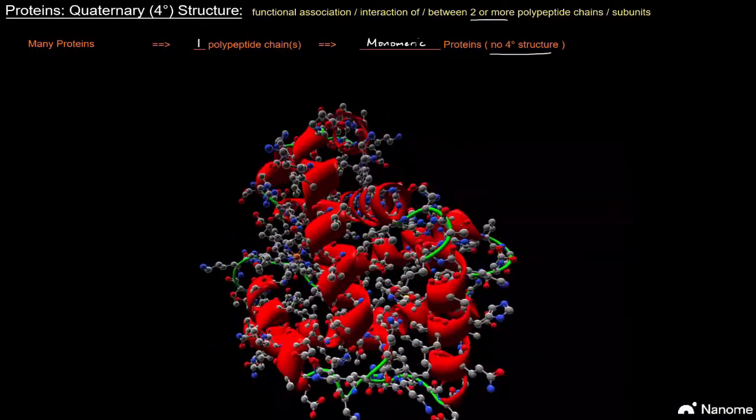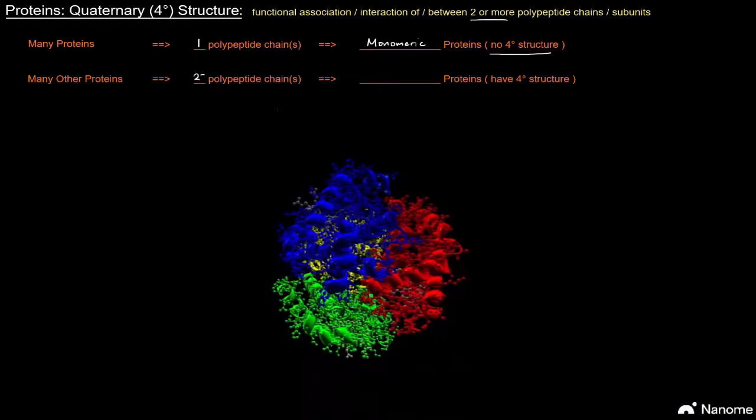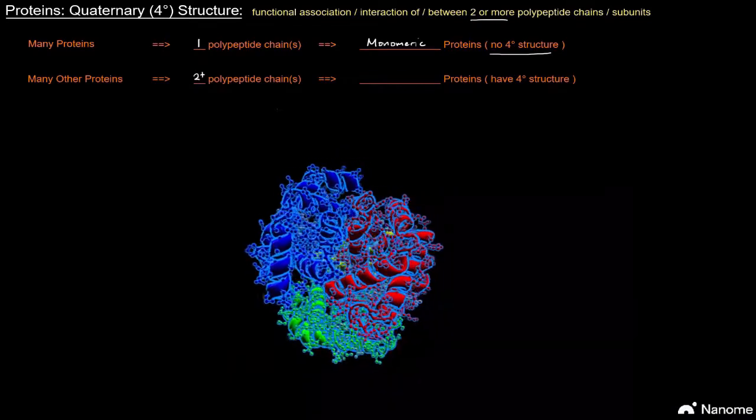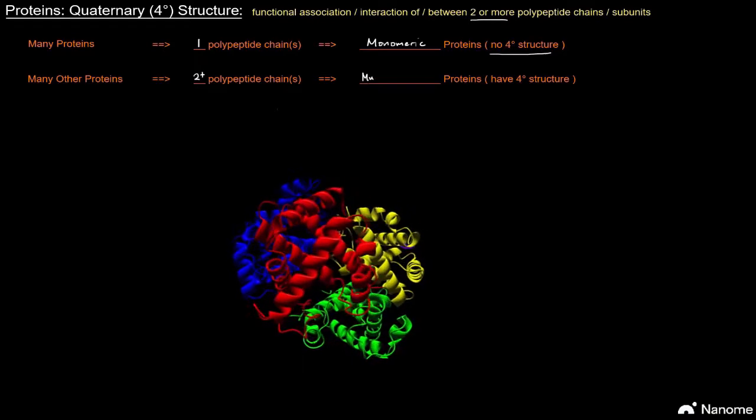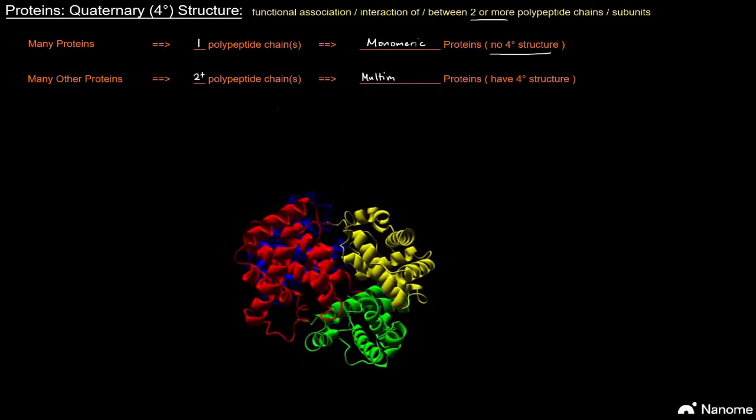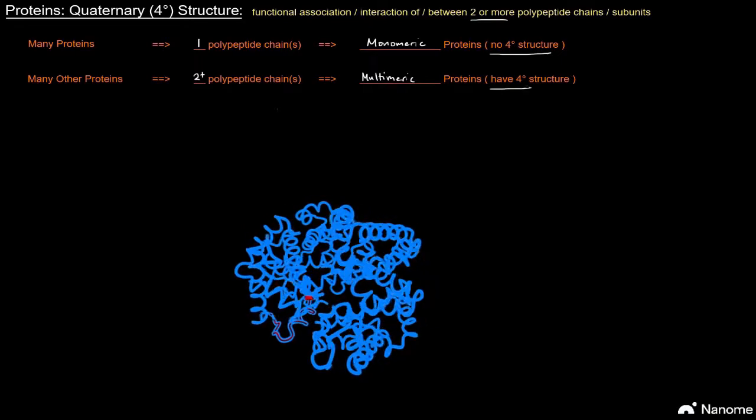Now there are many other proteins that have two or more polypeptide chains and therefore they're called multimeric proteins. Multimeric proteins and they do have quaternary structure.